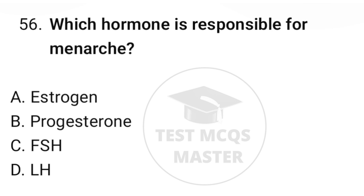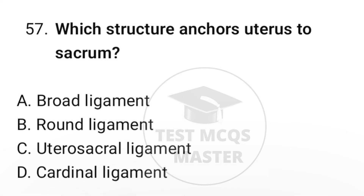Question number fifty-six: which hormone is responsible for menarche? The correct option is A, estrogen. Question number fifty-seven: which structure anchors the uterus to the sacrum? The correct option is C, uterosacral ligaments.